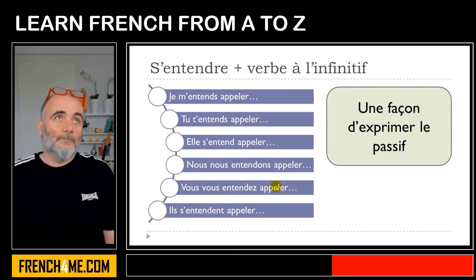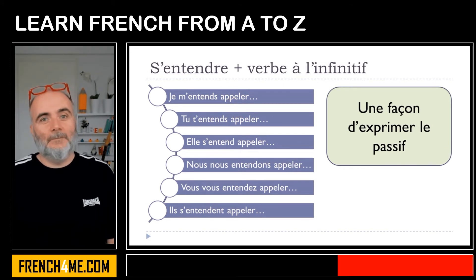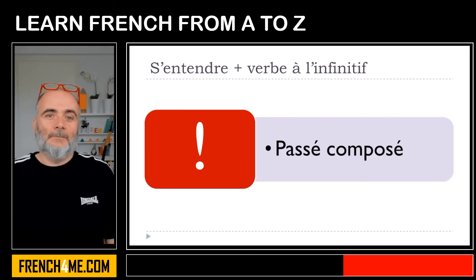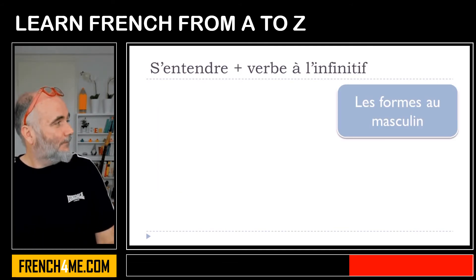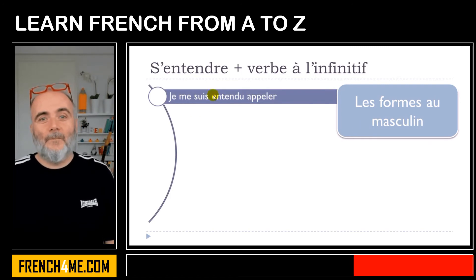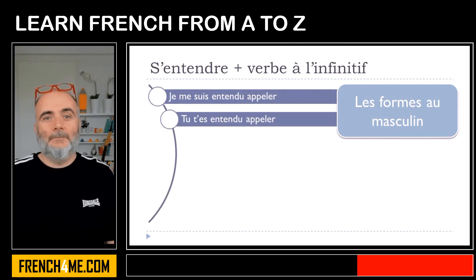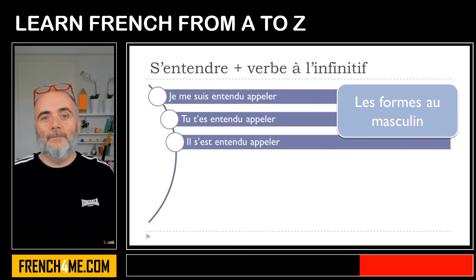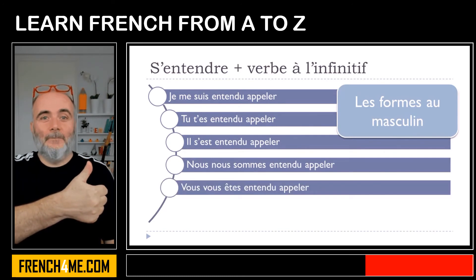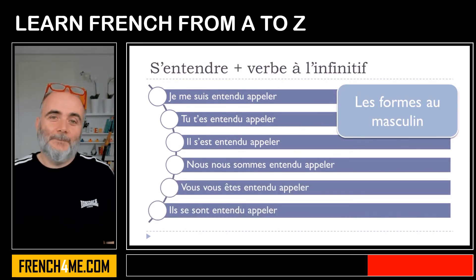It's actually quite simple to make. Keep in mind that as usual in French we've got some tricky forms, and we're talking in that case about le passé composé. For the masculine: je me suis entendu appeler, tu t'es entendu appeler, il s'est entendu appeler, nous nous sommes entendu appeler, vous vous êtes entendu appeler, ils se sont entendu appeler.